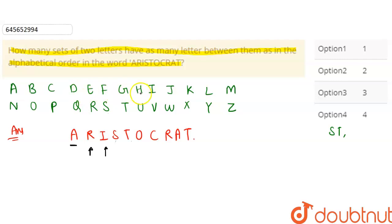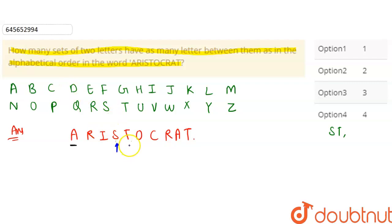Skip R, and check A and I — there are more than five or six letters: 1, 2, 3, 4, 5, 6, 7 letters between them in the alphabet, so this pair is possible here. Now check A and S — can be more than five or six letters.